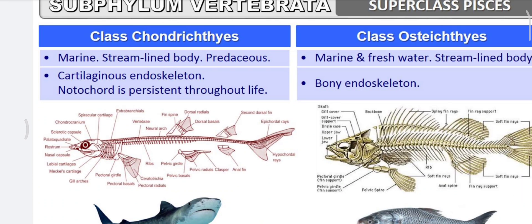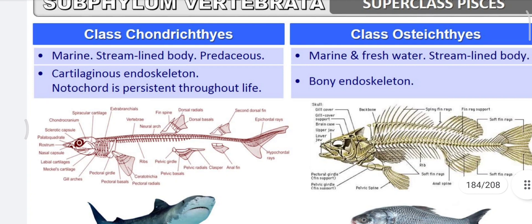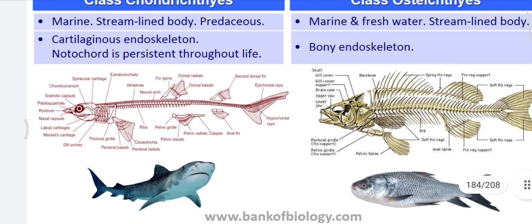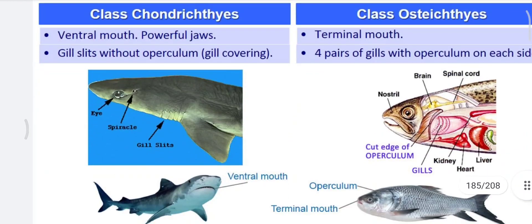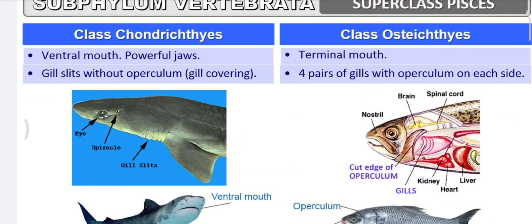Chondrichthyes are marine with a streamlined body and are mostly predaceous. The cartilaginous endoskeleton is present and the notochord persists throughout life. The mouth is ventral with powerful jaws — that is why they come under Gnathostomata. In Chondrichthyes, gill slits are present without an operculum, except in Chimaera fish which have an operculum.